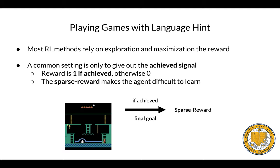Firstly, I want to talk about why a model needs language hints when playing games. Most reinforcement learning methods rely on exploring the environment and maximizing the feedback reward. However, it is difficult to design reward for each action step, so a common setting is to only give out the achievement signal — like whether it achieves the goal or wins. This sparse reward makes it very challenging for the agent to learn, and sometimes the policy just gives up due to the difficulty.